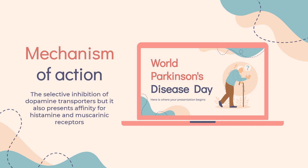Mechanism of Action. Benztropine is an agent with antimuscarinic and antihistaminic effects. Its main mechanism of action is the selective inhibition of dopamine transporters, but it also presents affinity for histamine and muscarinic receptors. It is widely known that benztropine is a potent inhibitor of presynaptic carrier-mediated dopamine transport. It is also known to be an analog of atropine and hence has a large affinity for muscarinic receptors M1 in the human brain.